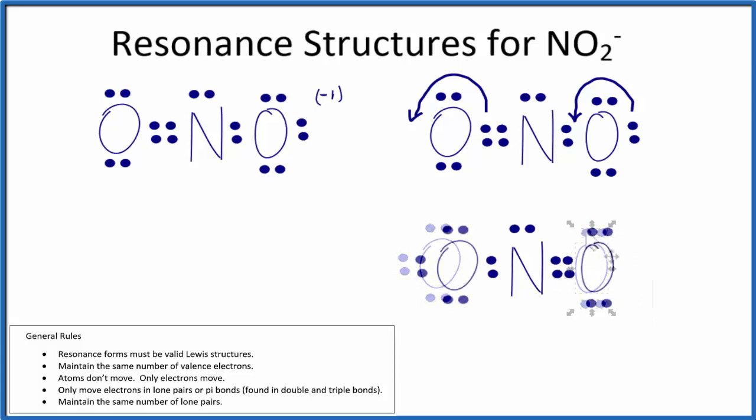So I take this pair here and move it over here, and I take this pair here and move it to form a double bond. When I do that, the formal charge is on this oxygen here, the one with the single bond. Because this follows the general rules, this is a valid Lewis structure for the nitrite ion.